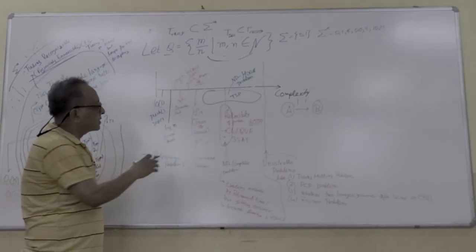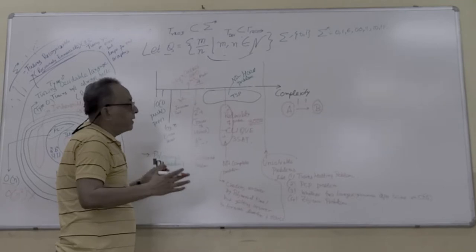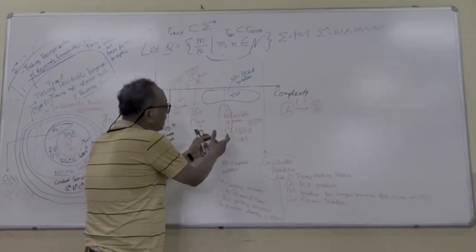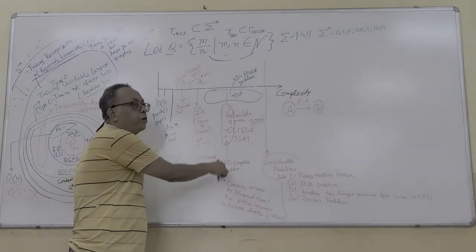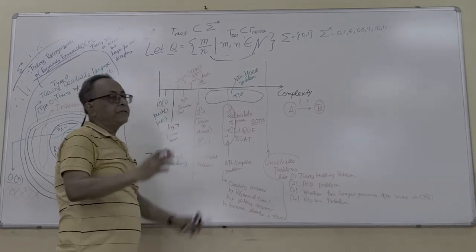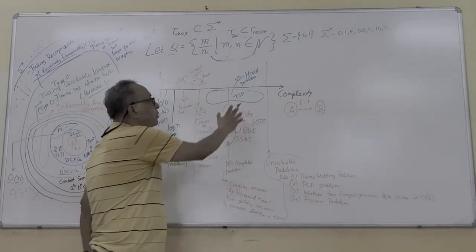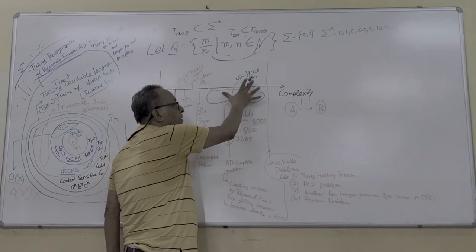NP-complete problems are tougher than Tower of Hanoi. Here, if you are given a solution, you can check it in polynomial time. But there are other problems which are NP-hard. If you are given a solution, checking it also takes exponential time. To find it, you also take exponential time. These are major tougher problems.